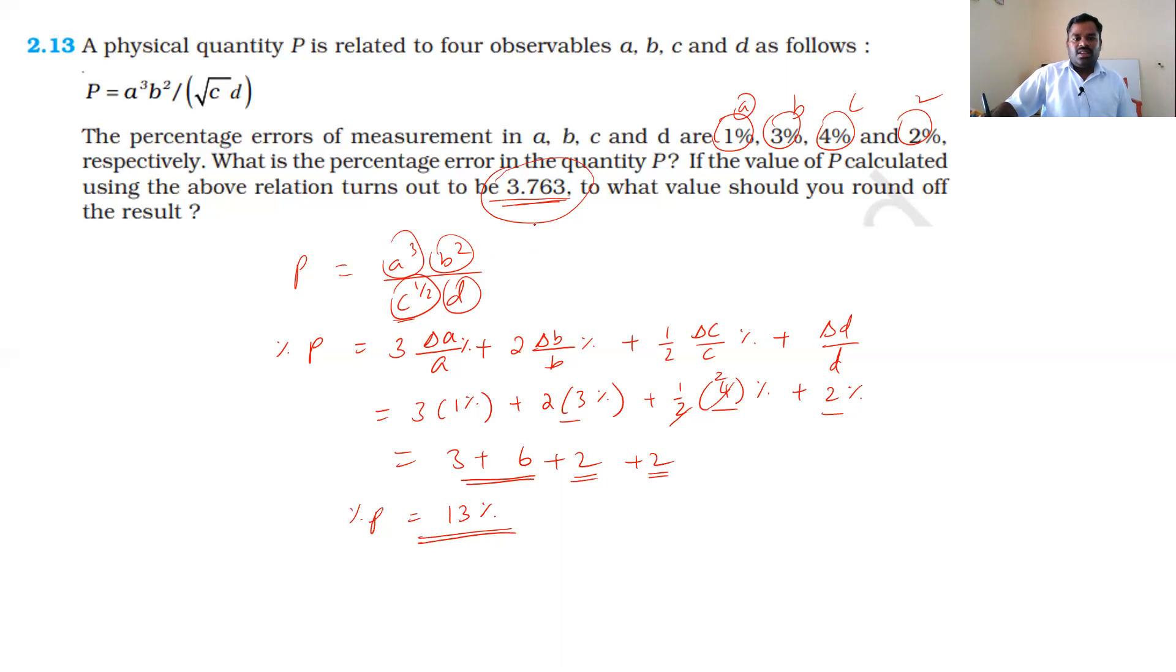If the percentage error is 13%, the value 3.763, the 6 is removed. Since 6 is greater than 5, the preceding number rises by 1, so 3.8.